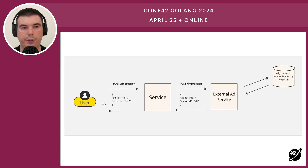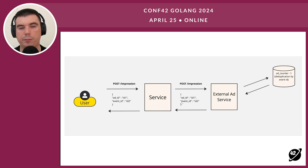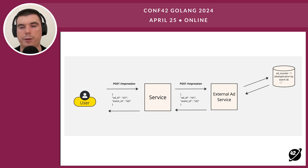How can we fix it? We could add an event id — one more id to our payload. But unlike ad id, which is the id of the ad, event id is the id of the particular event — a unique id for every impression, every event. Having that id, we should also add it to the payload between the service and the external ad service. This lets us deduplicate data on the database level. Even if we have two different payloads for the same impression, we can deduplicate by event id on the database level, and our data is consistent.